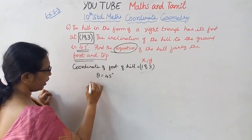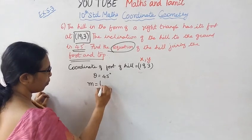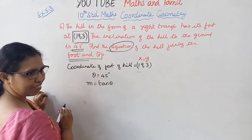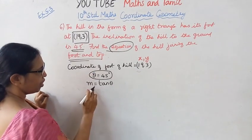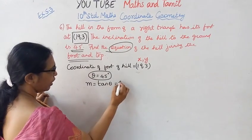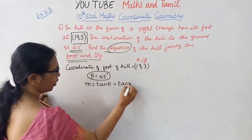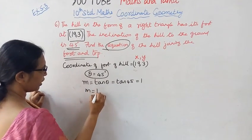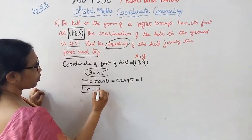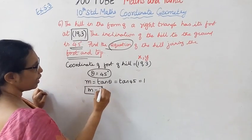We need to find the coordinates. M equal to tan theta. When theta is given, M equal to tan theta. Tan 45 is equal to 1. M is what? It's going to be 1. Slope is going to be 1.